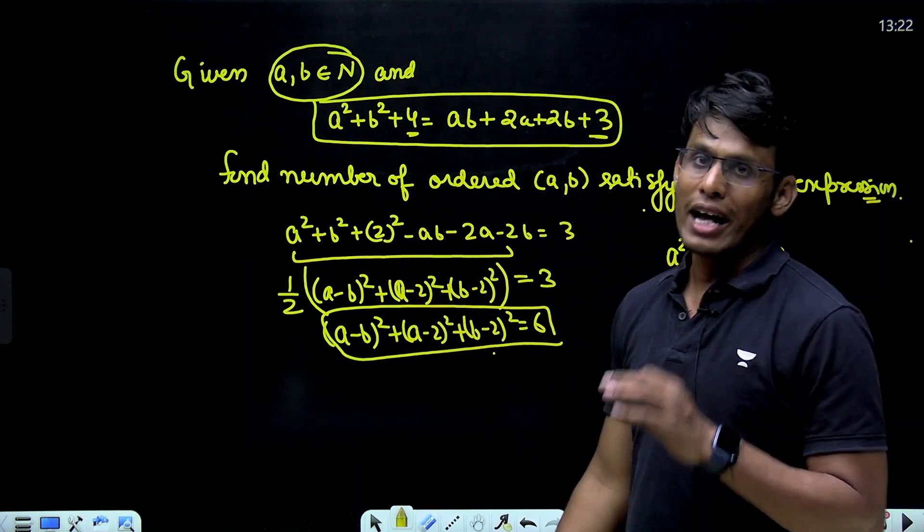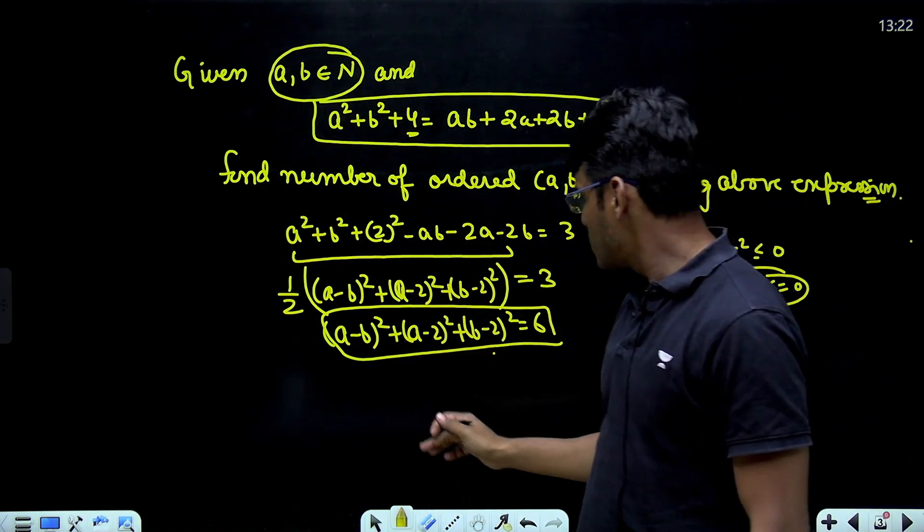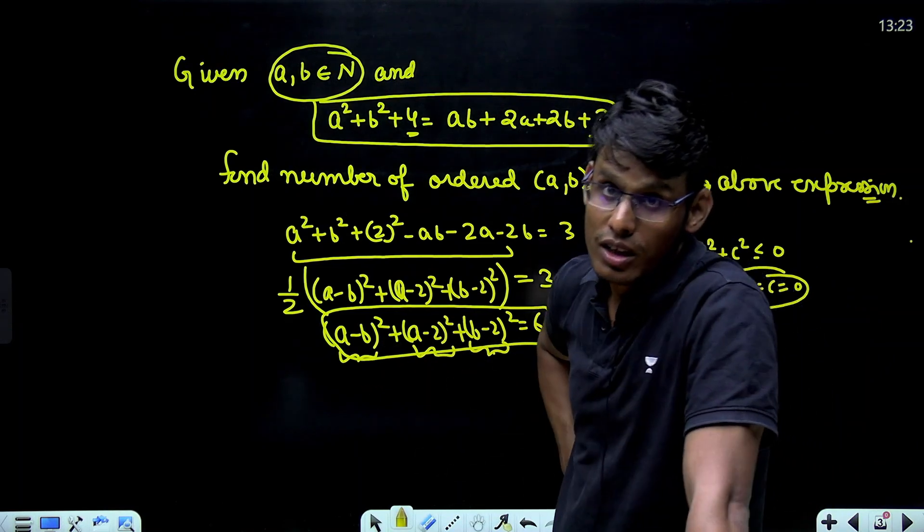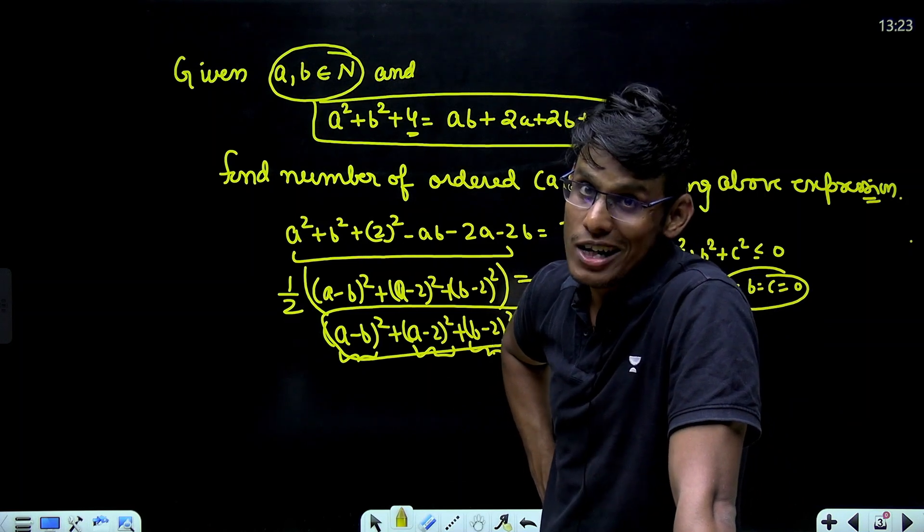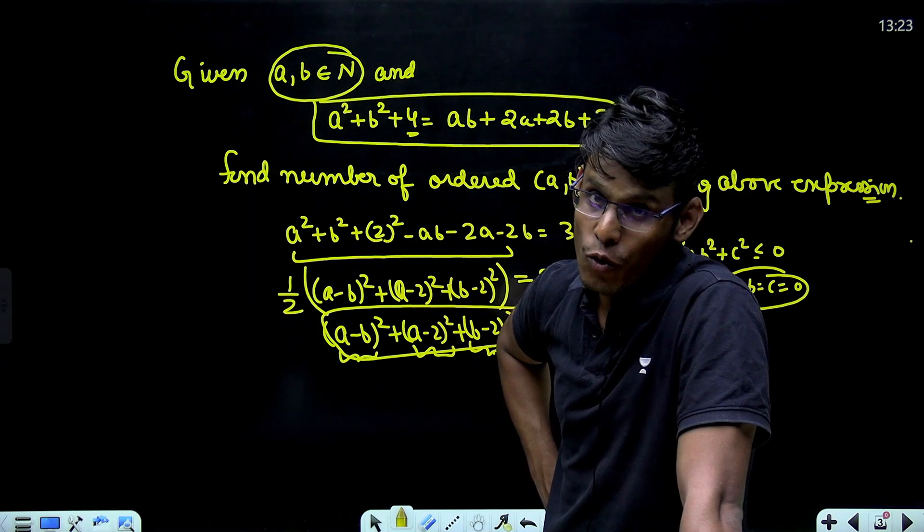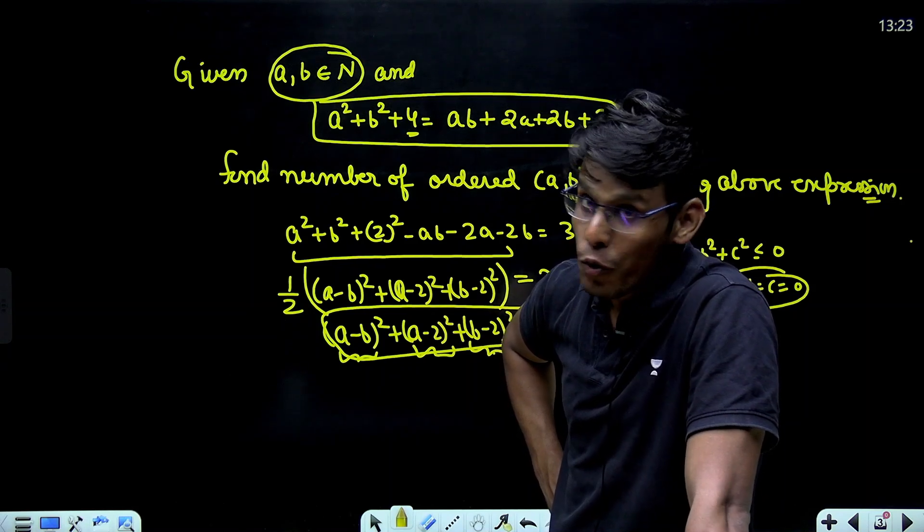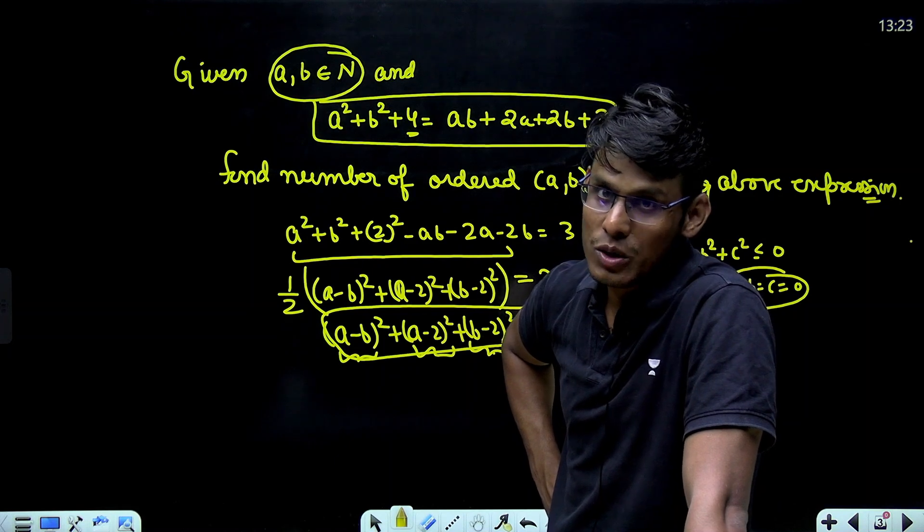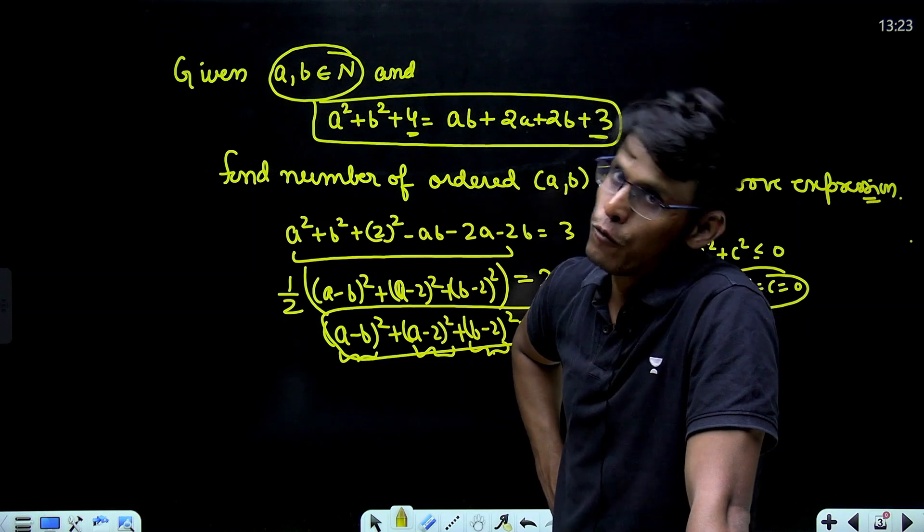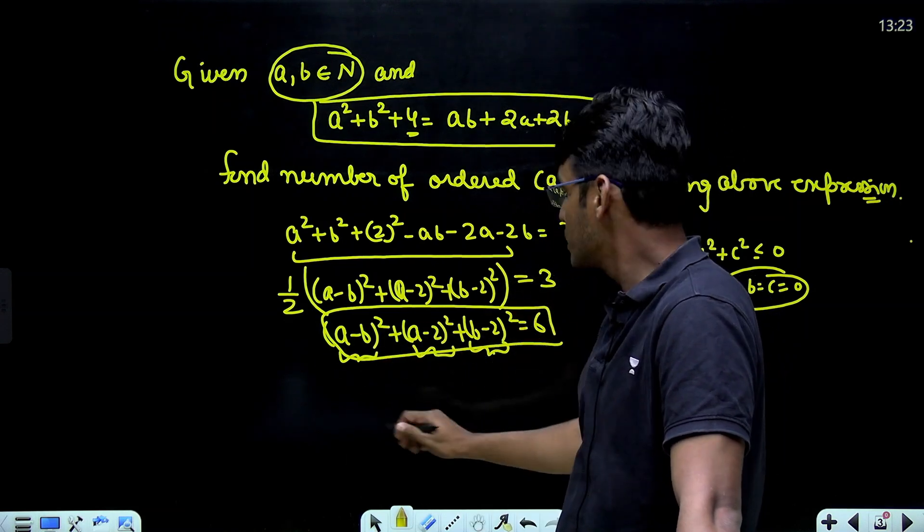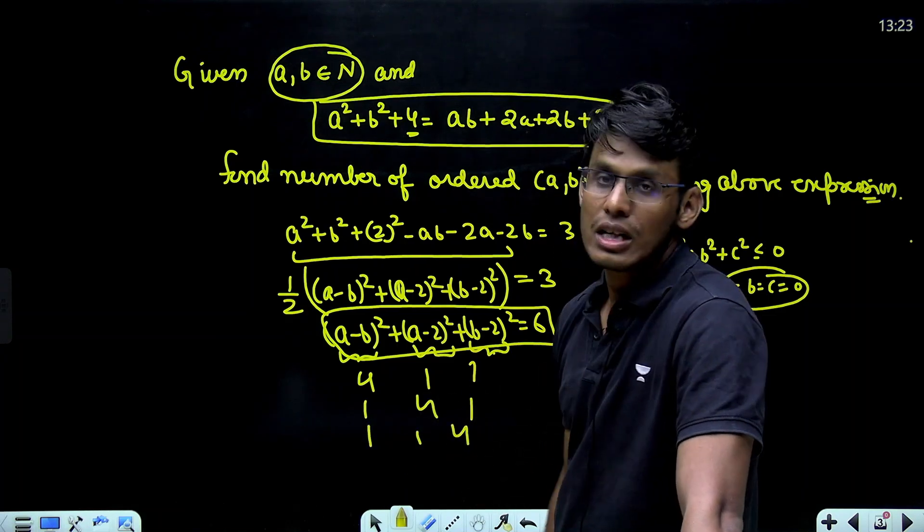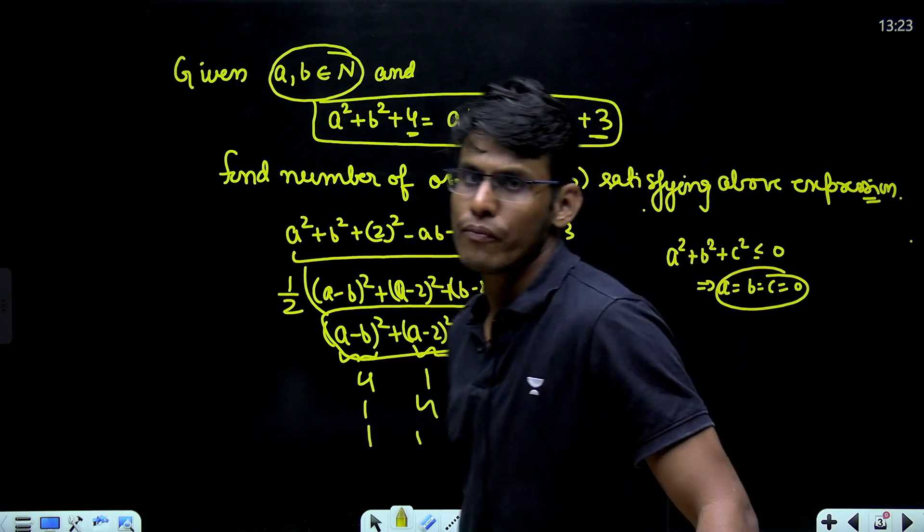But, it is coming out to be equal to 6. This is where we use this condition. A and B are natural numbers, which means these are perfect squares. Think 3 perfect squares adding up to 6. Think 3 perfect squares adding to 6. 0, 0, 4 no. 0, 2, 4 no. 2 is not a perfect square. 2, 2, 2 no. 0, 0, 0 is not a perfect square. 1, 1 and 4. 3 perfect squares adding up to 6. 4, 1, 1. 1, 4, 1. 1, 1, 4. This is how you solve it.